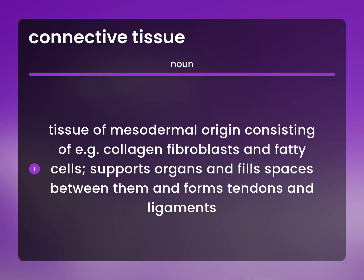Tissue of mesodermal origin consisting of, e.g., collagen, fibroblasts, and fatty cells. Supports organs and fills spaces between them, and forms tendons and ligaments.